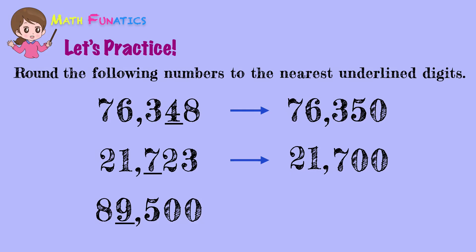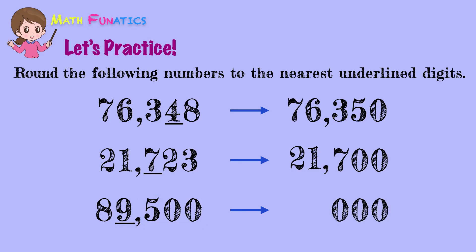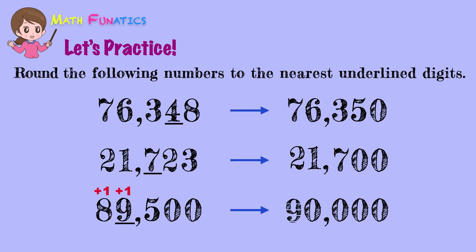In the last number, thousands is the identified rounding place. Since the digit on the right is exactly 5, we have to round up the number. Make all the 3 digits to the right zeros. Then add 1 to the digit 9 to get 10. Since 10 is a 2-digit number, it's just 0 that we write in the answer. Then carry the other digit, which is 1, to the 8 on the left side of the rounding place — 8 plus 1 is 9. So, our rounded value is 90,000.